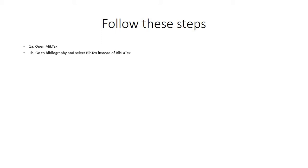After opening MiKTeX, go to the Bibliography menu and from there select BibTeX. Once you select that, go to File, click New, then again go to File and click Save. Name the file as references.bib, or whatever name you want to give it, but the extension must be .bib.